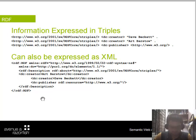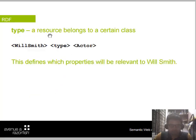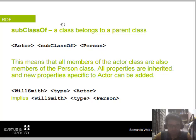RDF properties include: type, subClassOf, domain, and range. 'rdf:type' indicates that a resource belongs to a certain class — for example, 'Will Smith type Actor' defines Will Smith as an actor. 'rdfs:subClassOf' means a class belongs to a parent class — for example, 'Actor subClassOf Person', so a person can be an actor, boy, girl, etc.